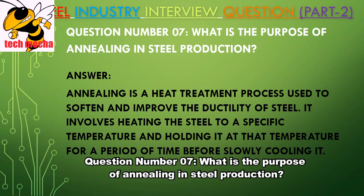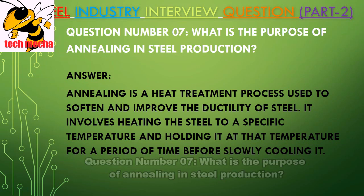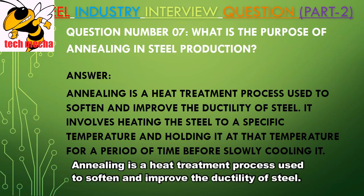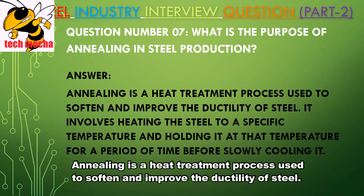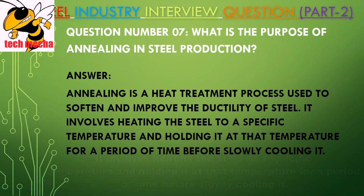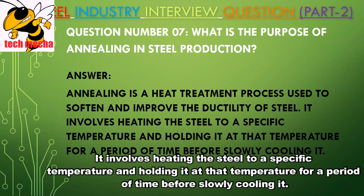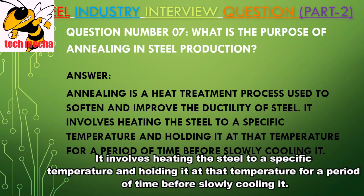Question Number 07: What is the purpose of annealing in steel production? Answer: Annealing is a heat treatment process used to soften and improve the ductility of steel. It involves heating the steel to a specific temperature and holding it at that temperature for a period of time before slowly cooling it.